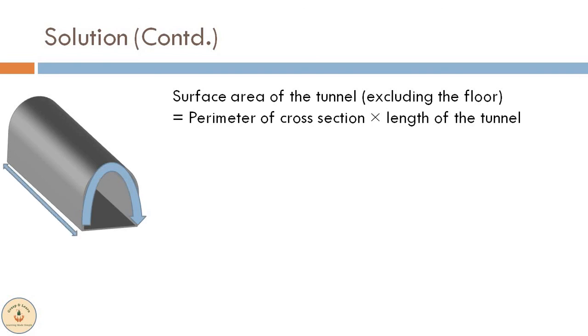We have calculated the perimeter of the tunnel as 25 meters and we know that the length of the tunnel is 50 meters. So when we multiply both these quantities, we obtain 1250 square meters. This is the surface area of the tunnel excluding the floor.